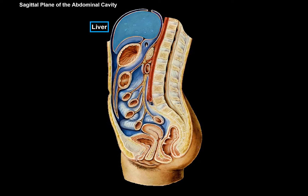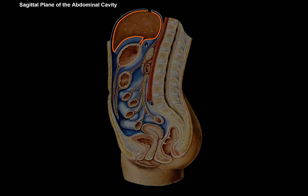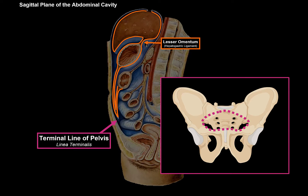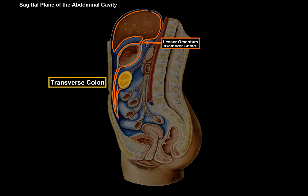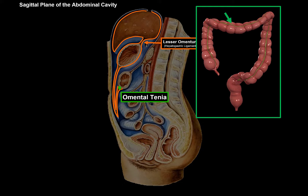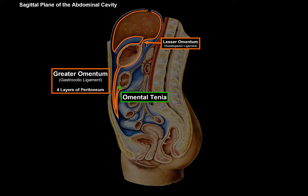This is a sagittal plane of the abdominal cavity. The liver and stomach are here, and between them is the lesser omentum — the hepatogastric ligament. The lesser omentum is made up of two layers because the visceral peritoneum wraps around the liver forming two layers, then surrounds the stomach, continues down, and once it reaches the terminal line of the pelvis, the peritoneum turns and attaches to the transverse colon — specifically to the omental tenea, which is anteriorly located on the transverse colon. That is the gastrocolic ligament, consisting of four layers due to this double-layered fold.